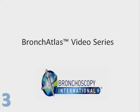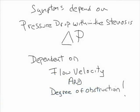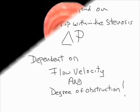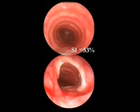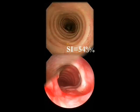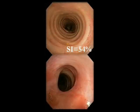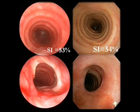Here we have examples of two patients with stenosis and similar degrees of narrowing, but different impact of narrowing on functional status. Patients have different degrees of physical activity — this is our marathon runner, who is symptomatic, and this is our sedentary patient, who has no symptoms whatsoever. Different degrees of physical activity cause different flow velocities through the strictures and differences in work of breathing.